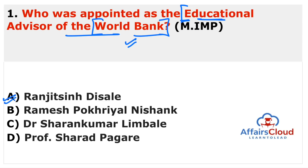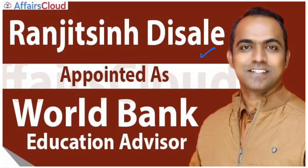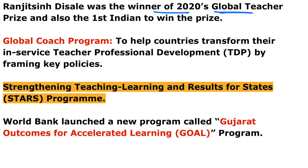The answer is Ranjitsinh Disale. Remember this name — it is very important. He was also the winner of the 2020 Global Teacher Prize and is the first Indian to win this prize. He belongs to Maharashtra and is a school teacher. A total of 12 advisors from around the world were appointed by the World Bank as educational advisors, and Ranjitsinh Disale is one of them.